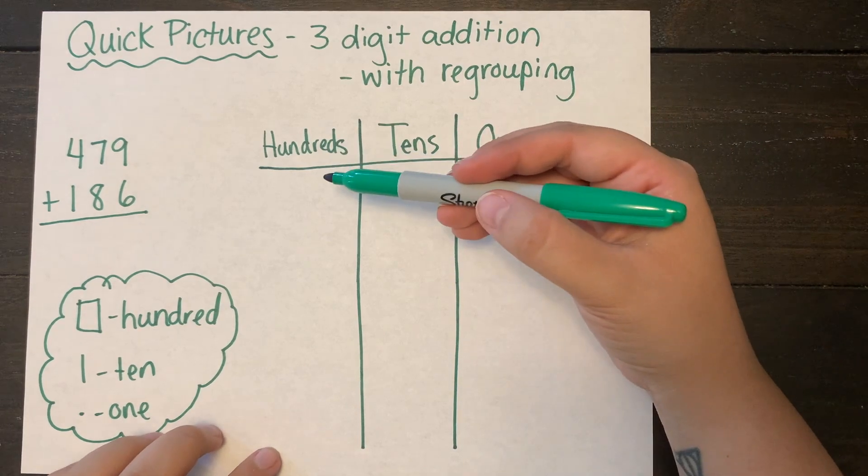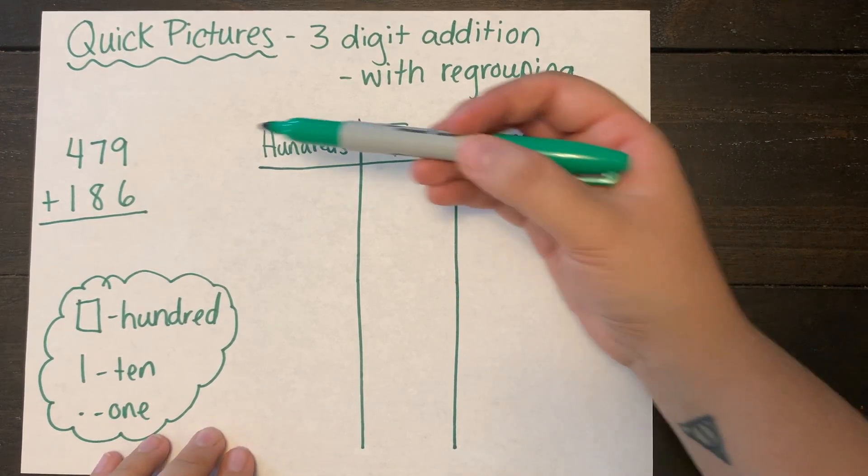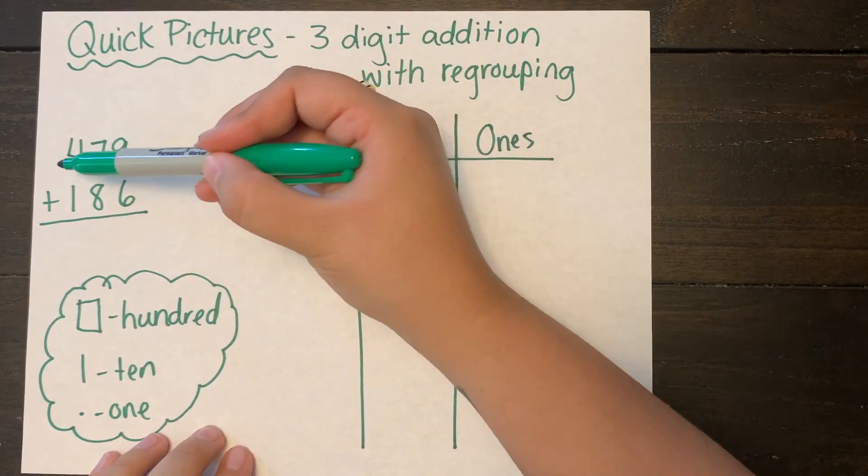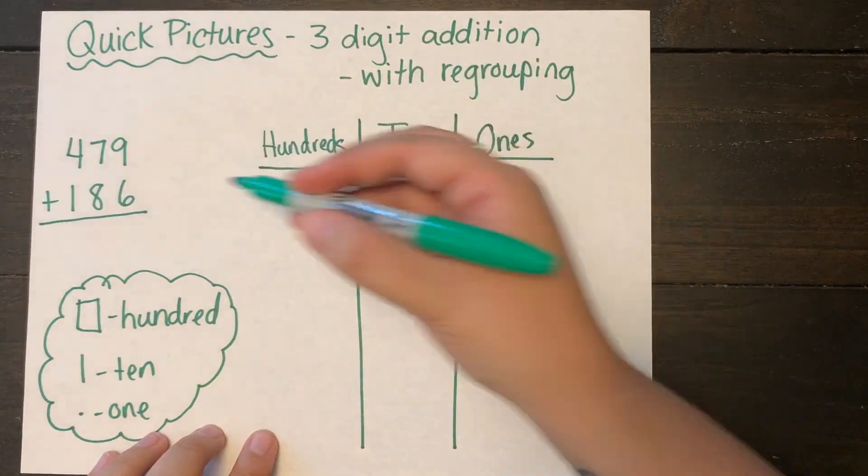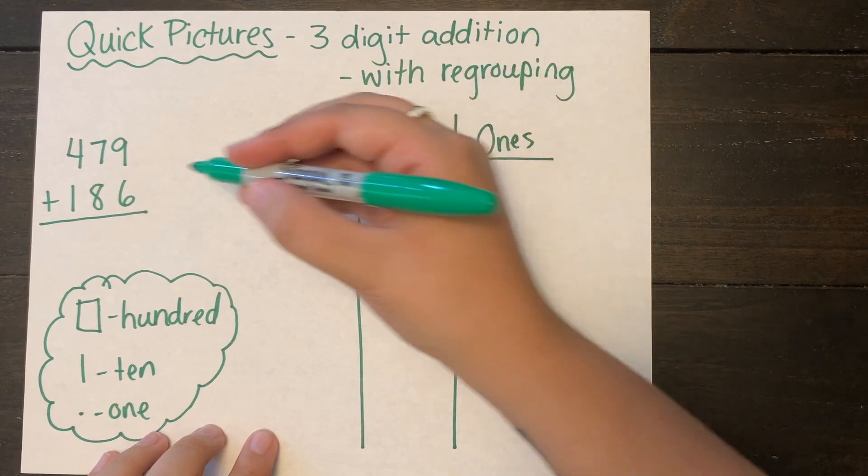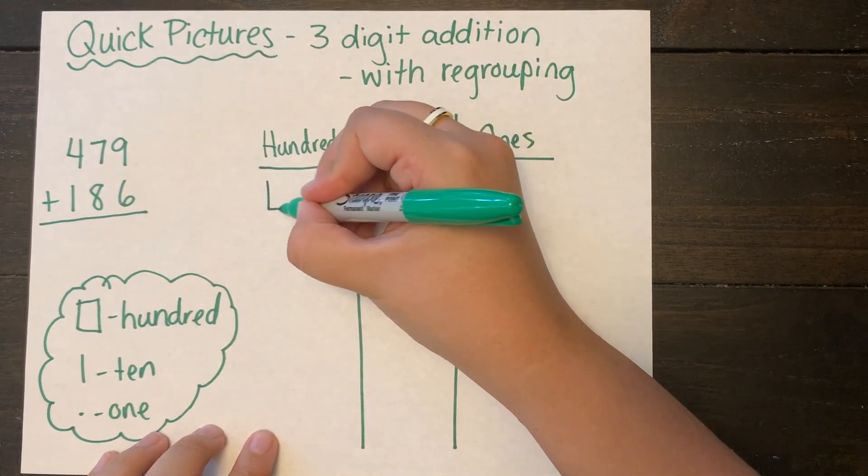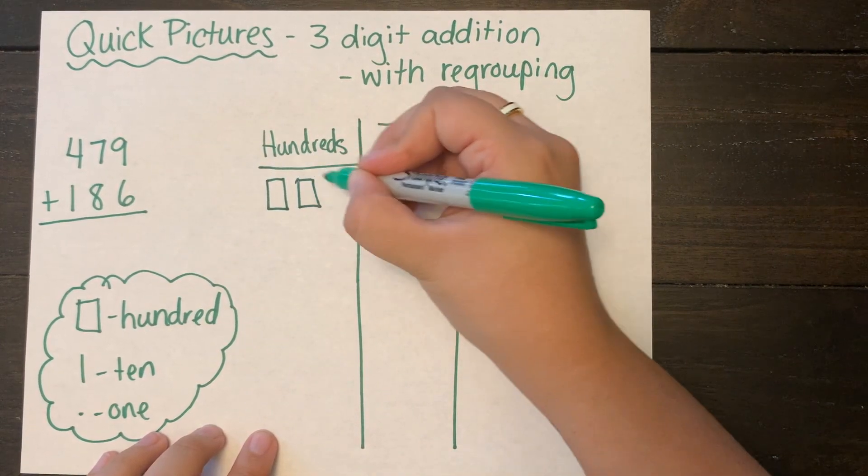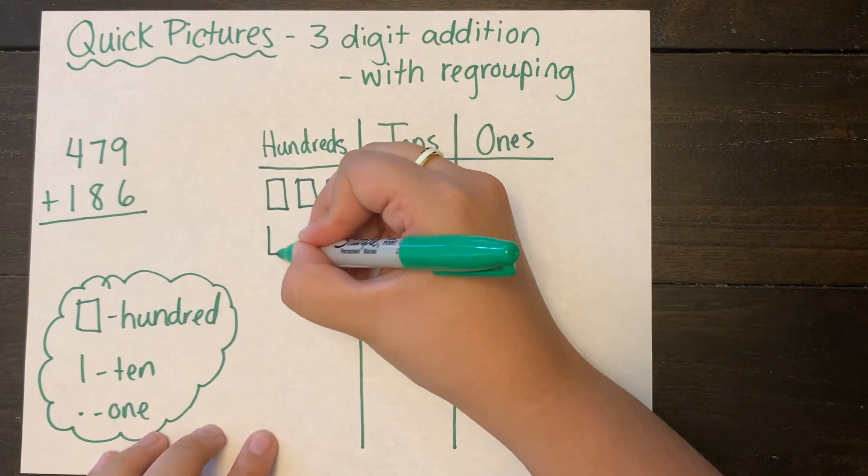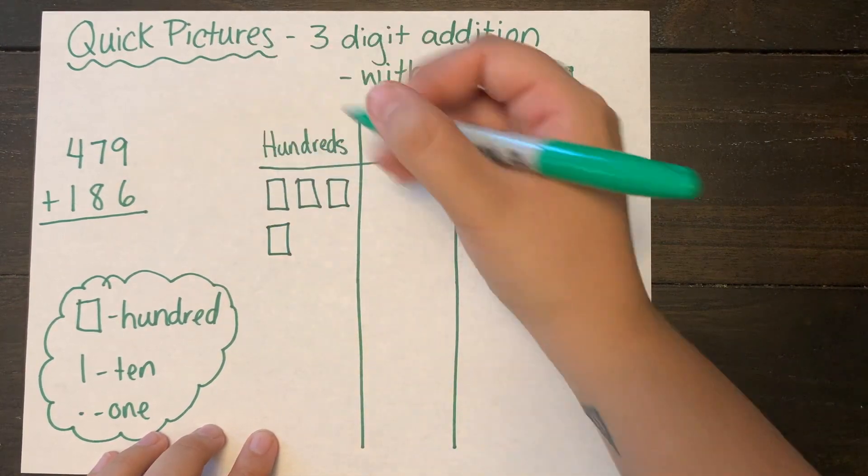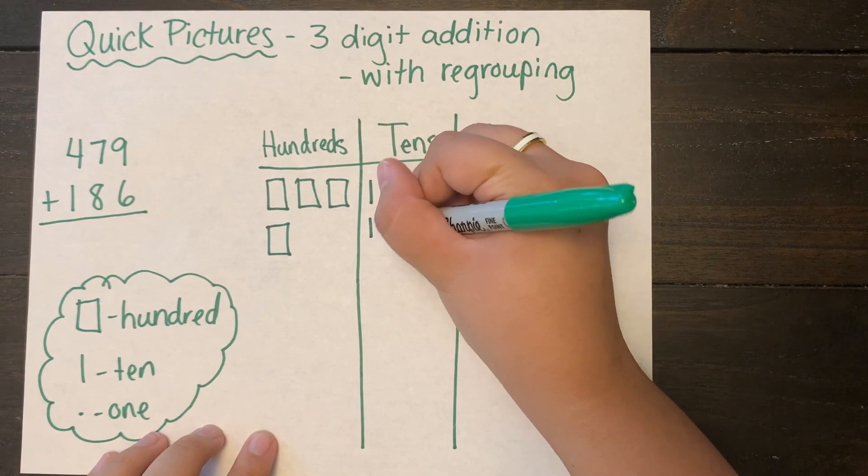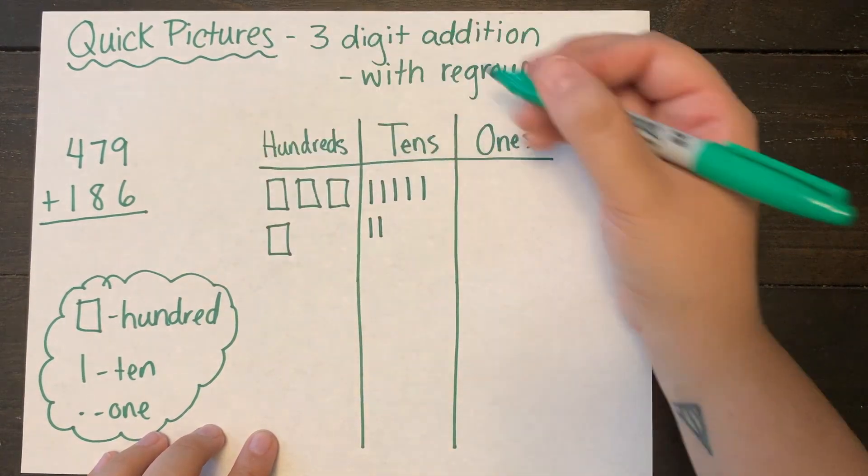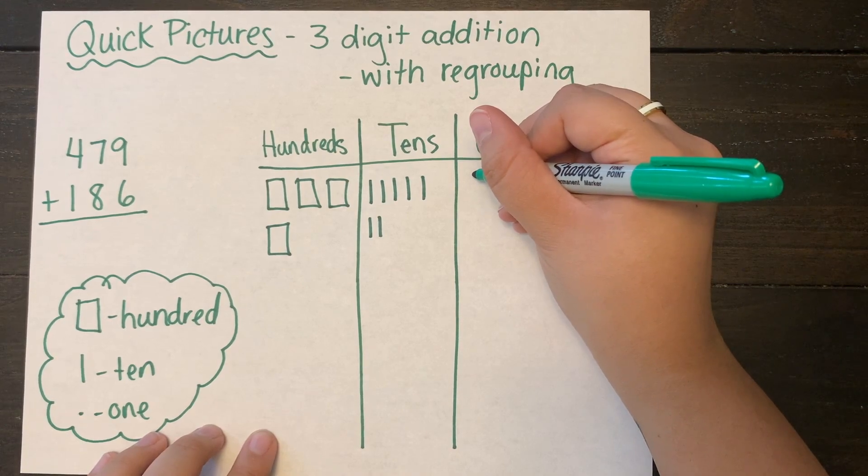So I'm going to start off by drawing my first addend which is 479. I have four hundreds in four hundred seventy nine. Next I'm going to draw seven tens, using my lines to represent my tens, and nine ones. Nine dots represent my ones.